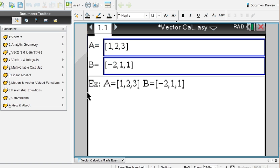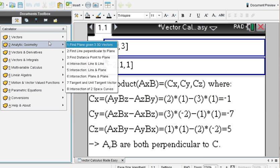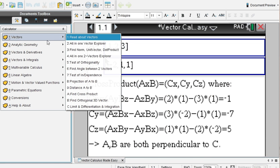Cross product for three dimensional vectors. Step by step. Right here for you. Negative one, negative seven, five are the components of the third vector that is then perpendicular to A and B vectors. So let's move on.